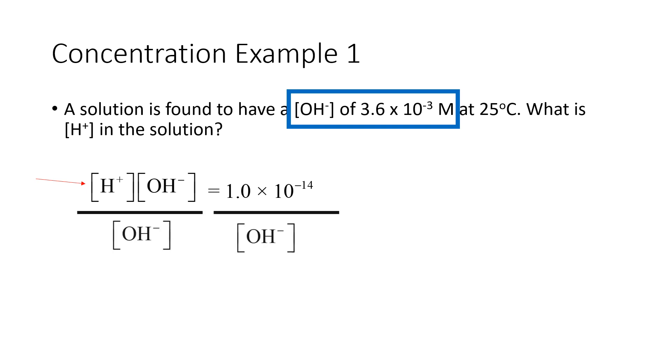Divide each side by the concentration of hydroxide. The hydroxide terms will cancel on the left-hand side. Substitute the hydroxide concentration into the equation. This calculation gives a concentration of H+ of 2.8 times 10 raised to the minus 12 molar.